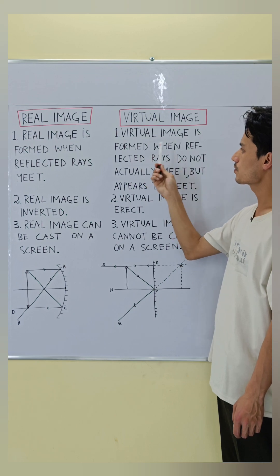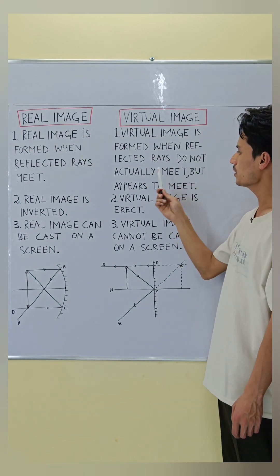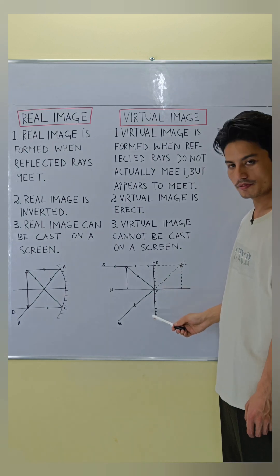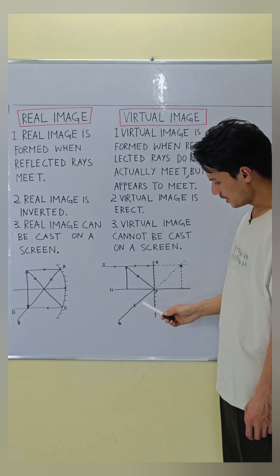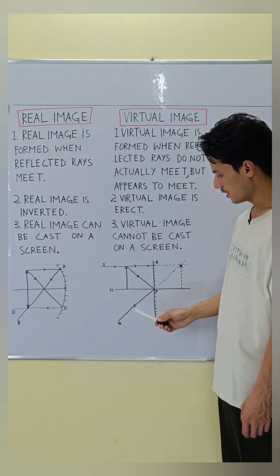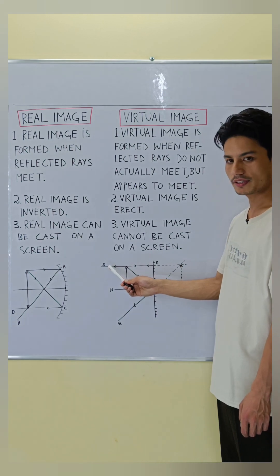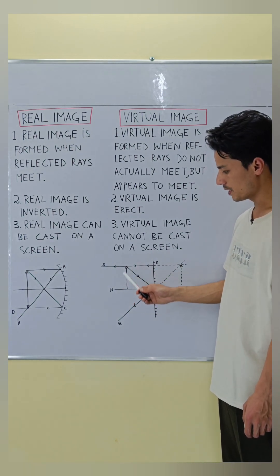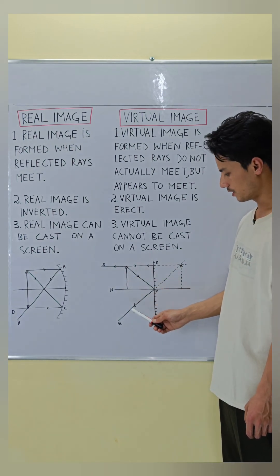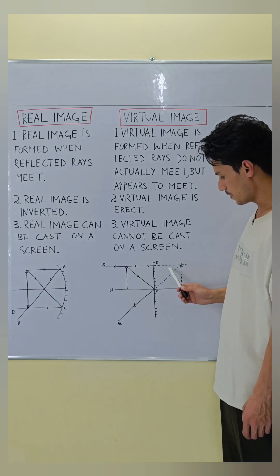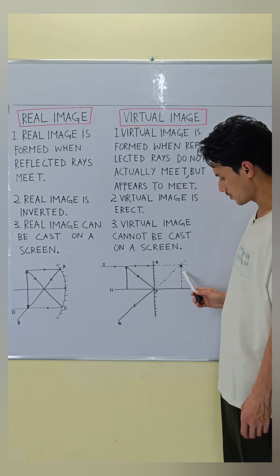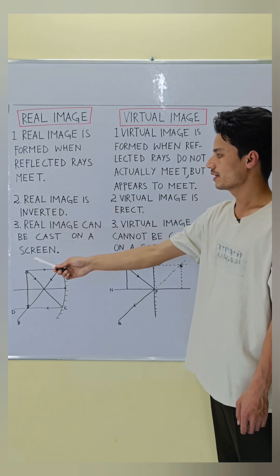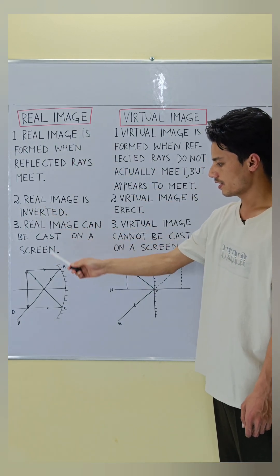Virtual image, point number one: a virtual image is formed when reflected rays do not actually meet but appear to meet. In the ray diagram given below, PQ is the reflected ray and RS is the other reflected ray. PQ and RS do not meet, but on extending they appear to meet here, so the image is formed here.